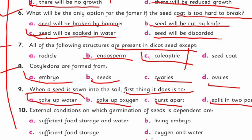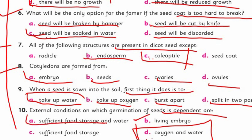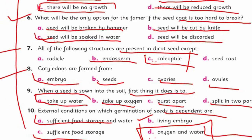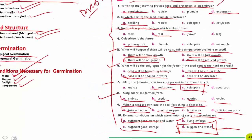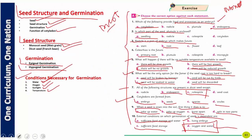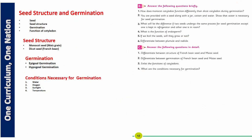Question ten: external conditions on which germination of seeds depends — externally, the conditions are oxygen, water, and temperature. A living embryo and sufficient food are internal conditions. External conditions are oxygen, water, and temperature. So my dear students, those were your MCQs. I have helped you today. Now we move towards the short questions and long questions, which are purely your task.